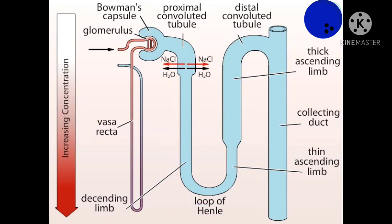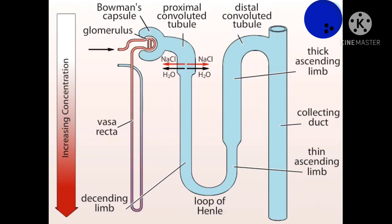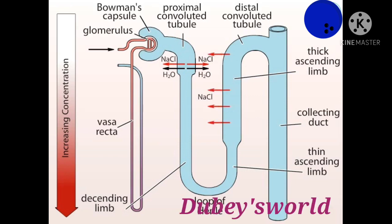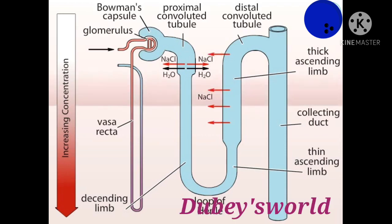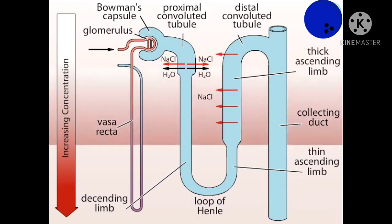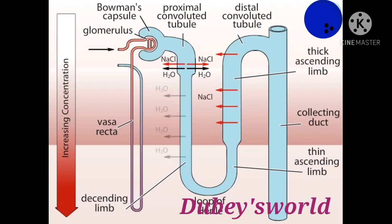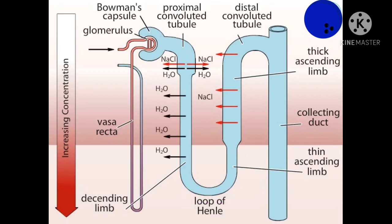To understand the counter-current multiplier mechanism, it's easiest to move backward through the tubule, starting with the thick ascending limb. The thick ascending limb actively transports sodium ions from the tubule fluid into the surrounding tissue fluid. Chloride ions follow passively. The thick ascending limb is not permeable to water, so the reabsorption of sodium and chloride ions out of this part of the tubule is not followed by the outward diffusion of water. This reabsorption of sodium and chloride ions raises the concentration of solutes in the surrounding tissue fluid. The descending limb, in contrast, is permeable to water but not very permeable to sodium and chloride ions. Since the surrounding fluid has been made more concentrated, water leaves the tubule by osmosis. As a result, the fluid in the descending limb becomes more concentrated as it flows toward the bottom of the medulla.